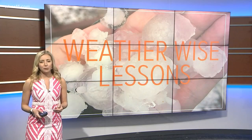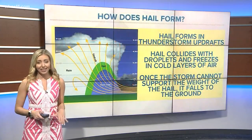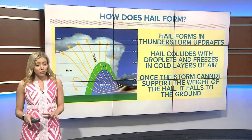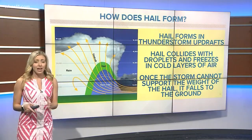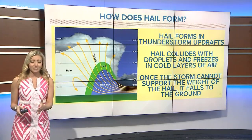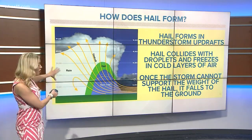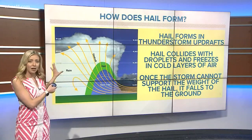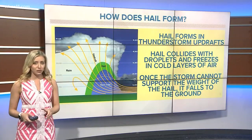Hail is a form of precipitation that is made of ice and can cause some real damage when it hits the ground. Hail forms in thunderstorm updrafts — those are strong wind gusts bringing warmth and moisture into a storm.